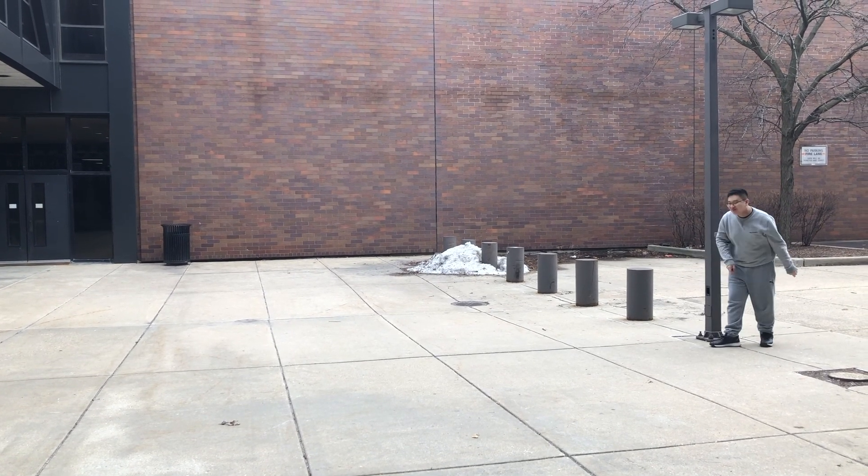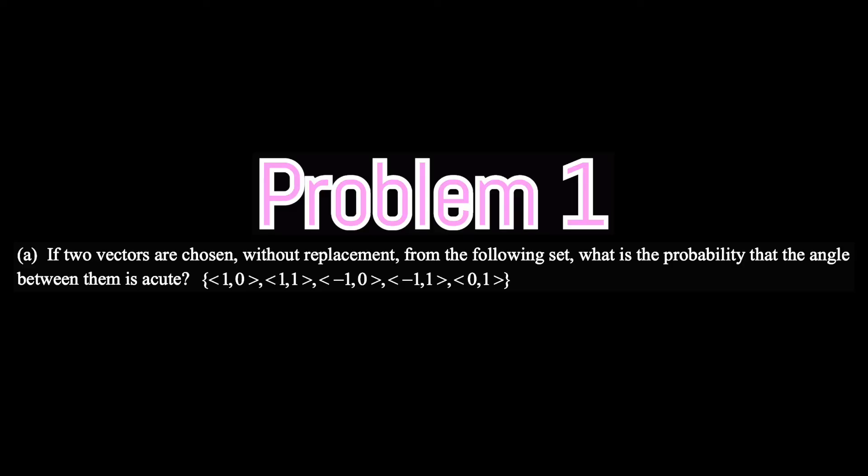Problem one: If two vectors are chosen without replacement from the following set—(1,0), (1,1), (-1,0), (-1,1), and (0,1)—what is the probability that the angle between them is acute?